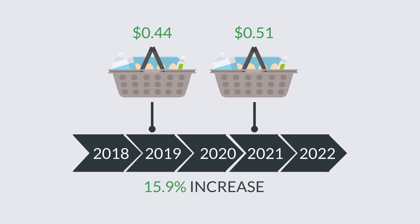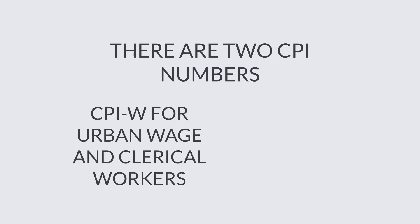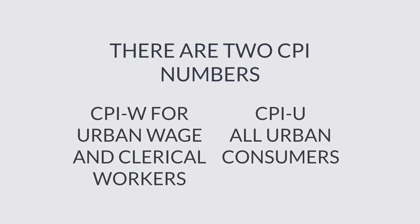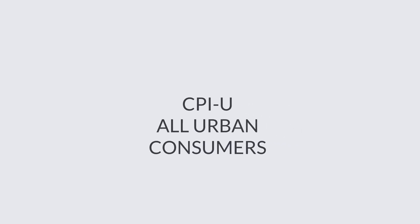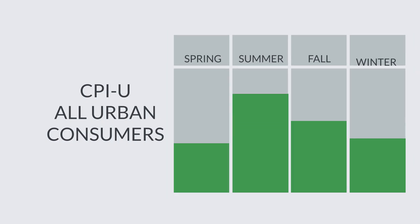There are two CPI numbers: the CPI-W for urban wage earners and clerical workers, and the CPI-U for all urban consumers. The most closely monitored metric is the CPI-U, which is usually represented by a seasonal adjustment because of seasonal variations in consumer behavior. The CPI is a detailed release that includes breakdowns from the majority of important consumer categories in geographical areas.